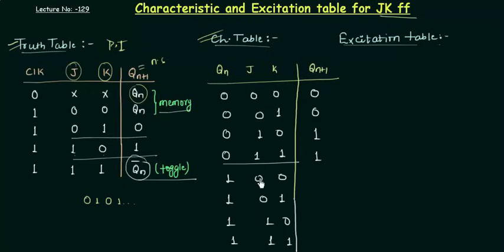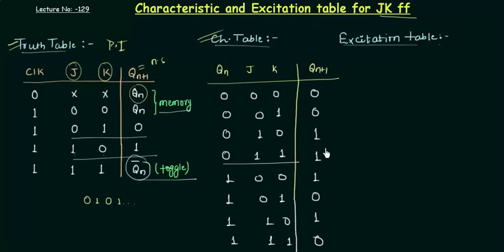When J=0, K=0 and Qn=1, it is the memory state so Qn+1 is 1. When J=0, K=1 and Qn=1, Qn+1 is 0. When J=1, K=0 and Qn=1, Qn+1 is 1. And when J=1, K=1 and Qn=1, it is the toggle state — Qn is 1, so we take the complement and get 0. This is the complete characteristic table. You only need to know the truth table to easily find your characteristic table.